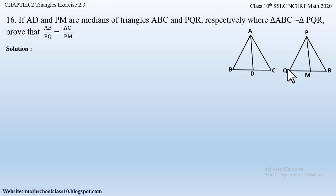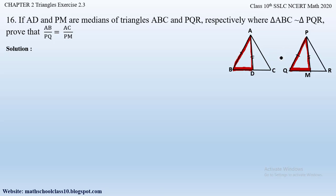We have to prove that AB by PQ is equal to AD by PM. The triangles formed because of these two sides are triangle ABD and triangle PQM. If we prove these two triangles to be similar, then the proportion of the sides of these two triangles will also be equal. So first of all let us write down what is given in the question.